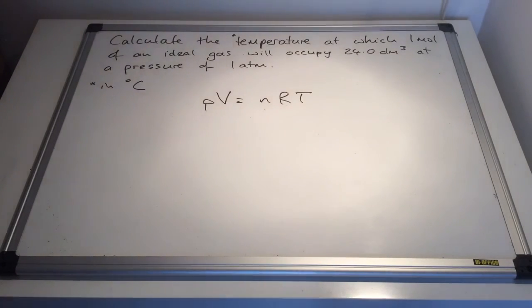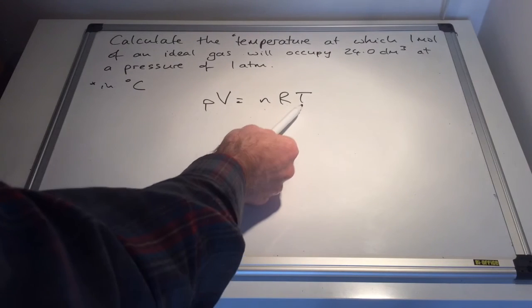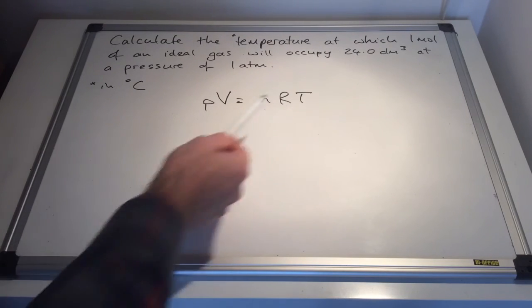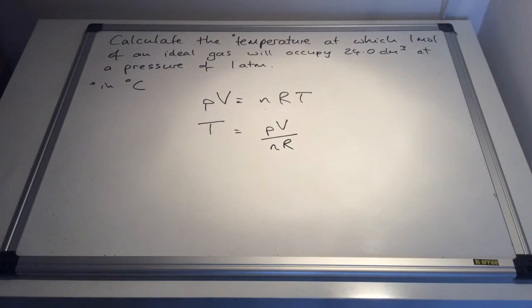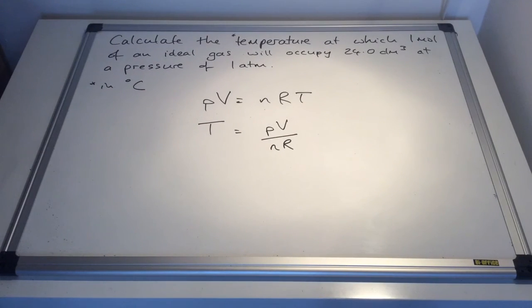So obviously, we're going to start with the ideal gas equation itself: PV equals nRT. And then we need to rearrange for the term that we want, and it's the temperature term, the T. So we need to rearrange this for T, so that becomes T equals PV over nR.